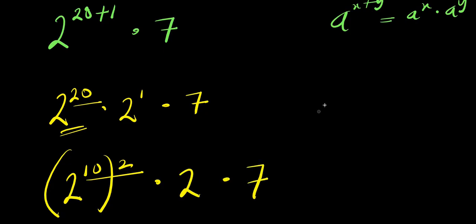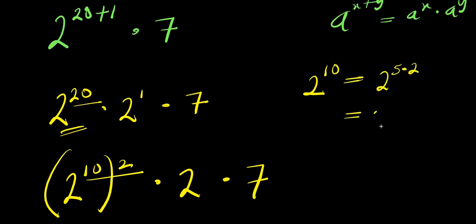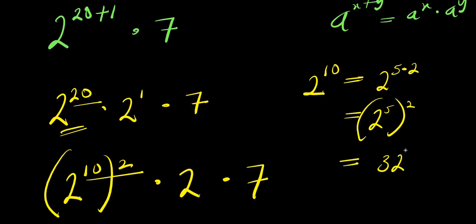Now remember: 2 to the power of 10 equals 2 to the power of 5 times 2, which is 2 to the power of 5, raised to the power of 2. And 2 to the power of 5 is 32, raised to the power of 2, and 32 squared is 1024. So 2 to the power of 10 equals 1024.